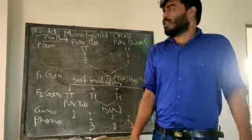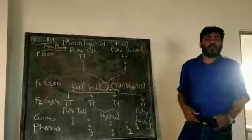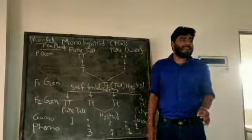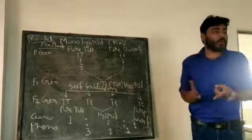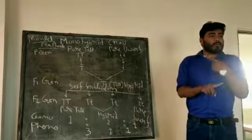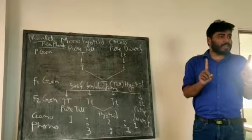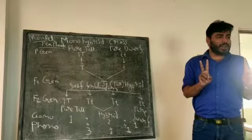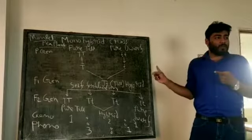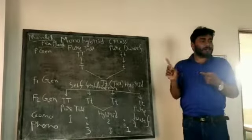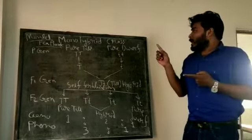What is a Monohybrid Cross? Mendel's Monohybrid Cross: mono means cross of one character, di means cross of two characters, tri means cross of three characters. So monohybrid means the cross of one character.